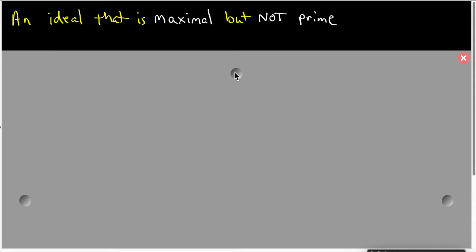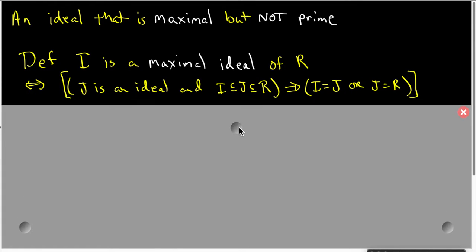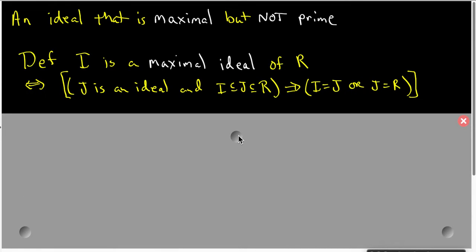To start with, I want to review what the definitions of these two kinds of ideals are. A maximal ideal has this definition: I is a maximal ideal of R if and only if J is an ideal of R and J contains I as a subset, then either I equals J or J equals R. In other words, what this is really saying is that there are no intermediate ideals that lie between I and R.